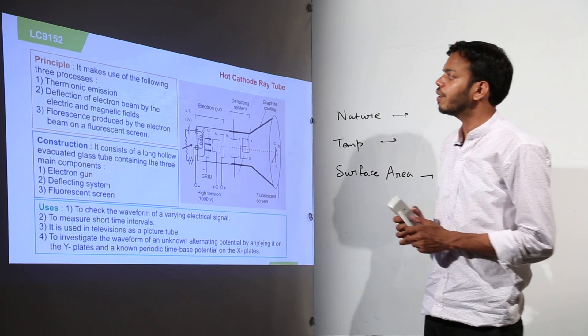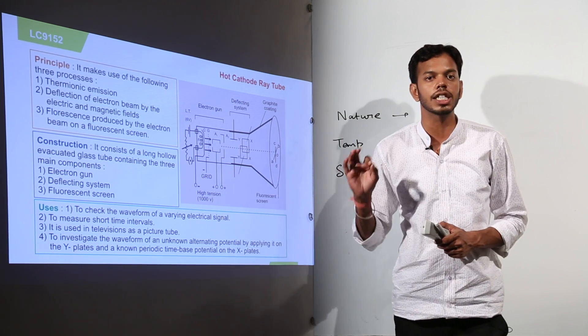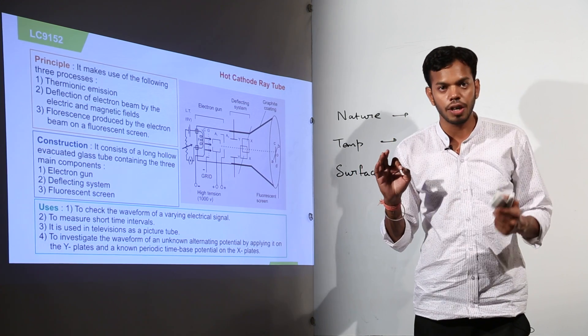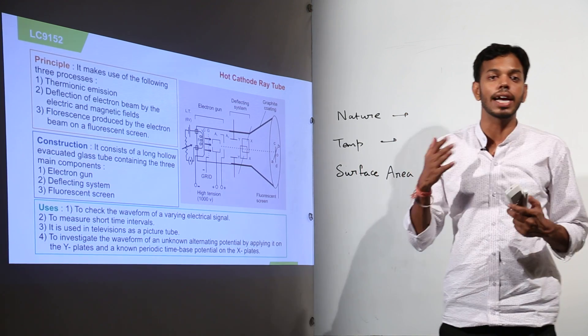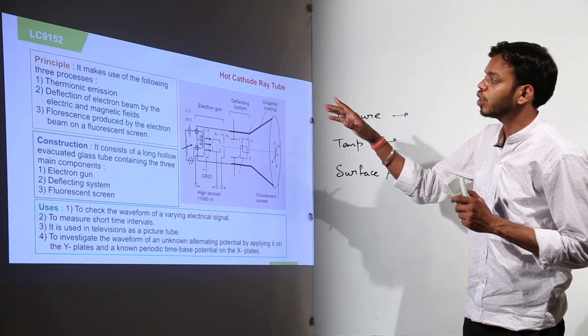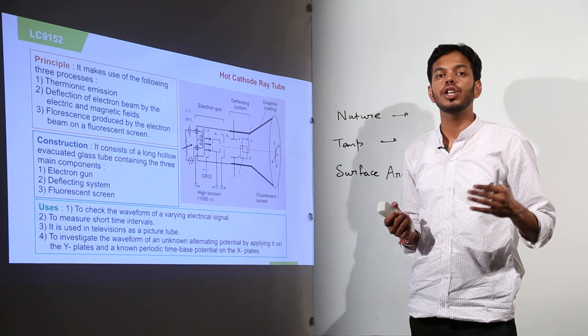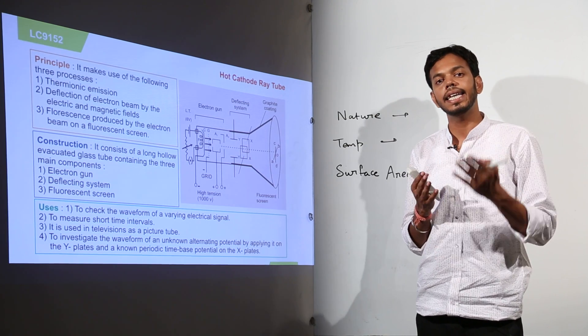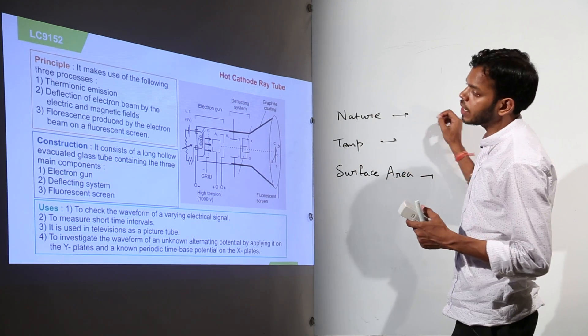It makes use of the following three processes which are thermionic emission. We know what is thermionic? It is the emission of electrons. The thermionic emission is the emission of electrons from metal surface when heat energy is imparted to it. That was the first principle.